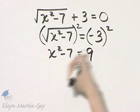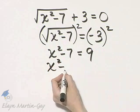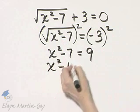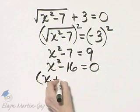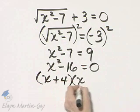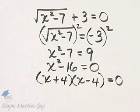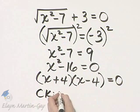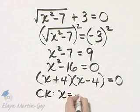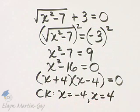Now I have a quadratic equation. I'll subtract 9 from both sides, and I'll have x squared minus 16 is equal to 0. That factors as x plus 4 times x minus 4 is equal to 0. Setting each factor equal to 0, you will have two proposed solutions: x equals negative 4 and x equals 4.